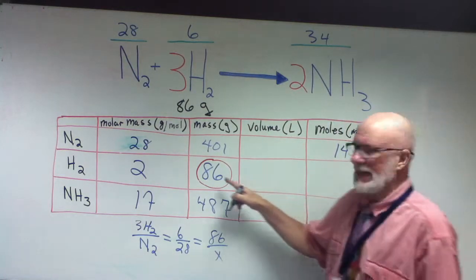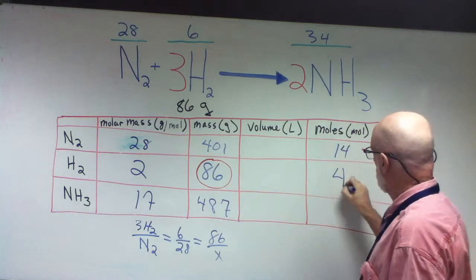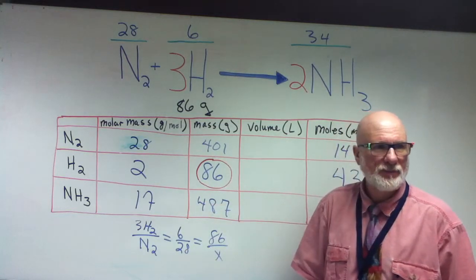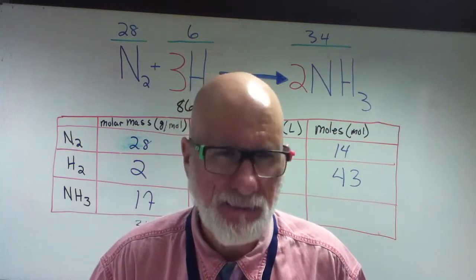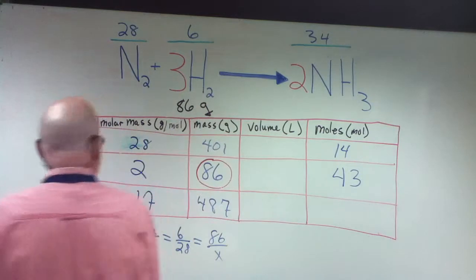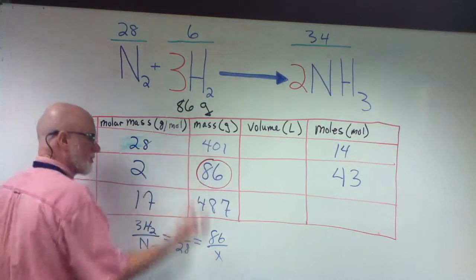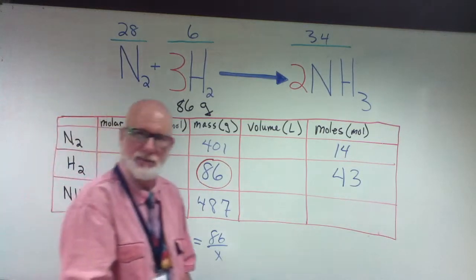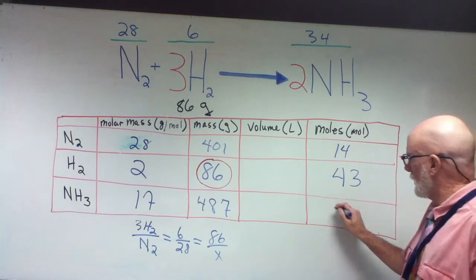Let's do this whole column. 86 divided by 2 — 43. 487 divided by 17. Do you see why I'm dividing by 17, 2, and 28? This represents a mole — molar mass, one mole — so how many moles can I divide into there? 29.